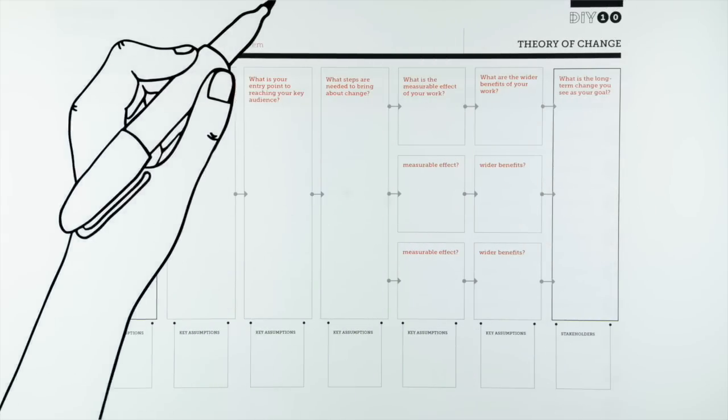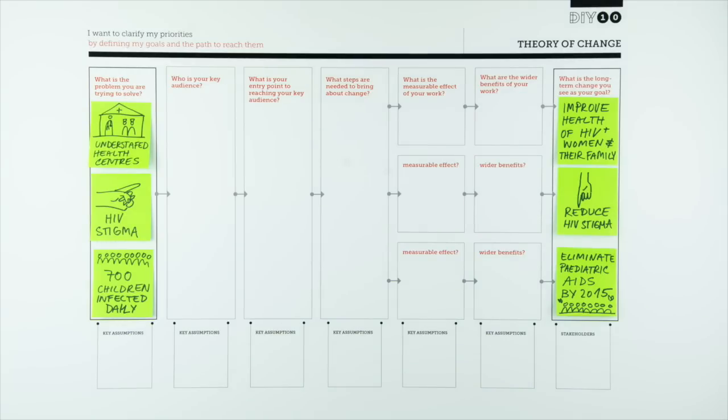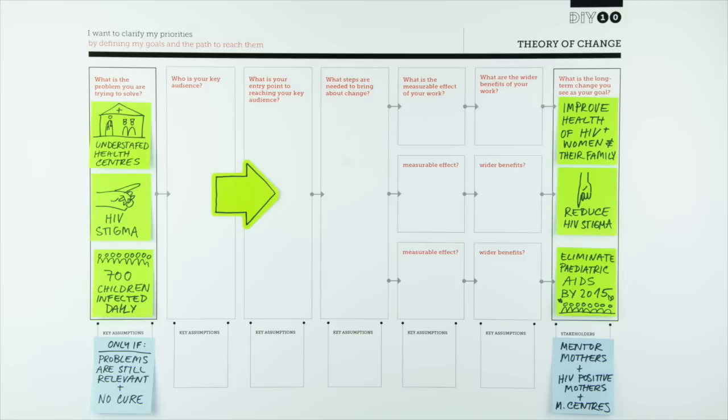She begins by writing down her long-term goal. At the other end of the worksheet, Danielle writes down the current issue that has triggered her to think this way. She finds it useful to take note of the assumptions she made while filling in the worksheet. She then starts working outwards from the defining problem.